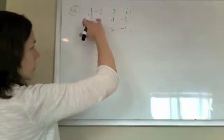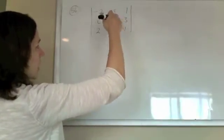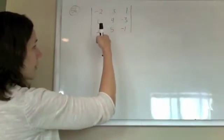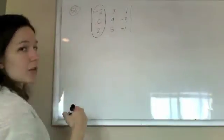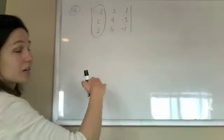We're going to choose a row or a column to expand across, and you want to choose one with a zero if you can, so I want to expand down that first column, but any one you pick will work.